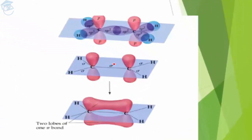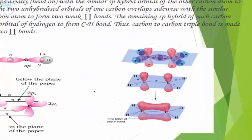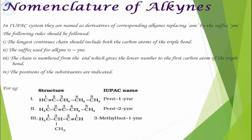We can see there is a sigma bond, and there is one lobe on one side and another lobe on the other side. Comparing this to sp² hybridization in alkenes, in alkenes there was one pi bond. In alkynes, with pi bonds on both sides, it forms one sigma and two pi bonds.